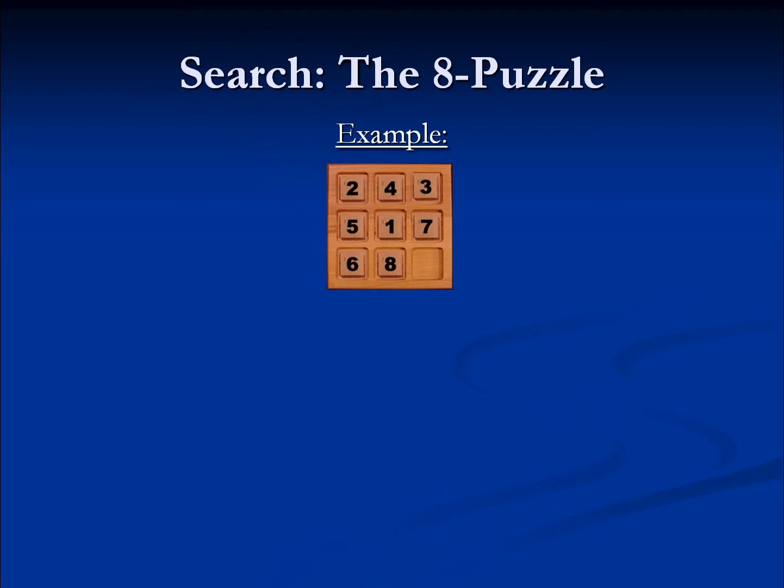We slide the tiles around to rearrange them into some desired order. In this particular example, we're trying to get the numbers in order. If you got one of these in a goodie bag when you were a kid, you were probably trying to arrange some picture, but the idea is the same. We move the tiles around one at a time until we get the arrangement we're looking for. In this example, we have two options at the start: we could move the eight over, or we could move the seven down.